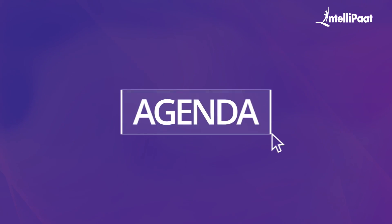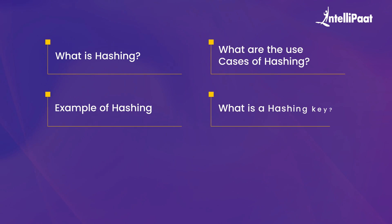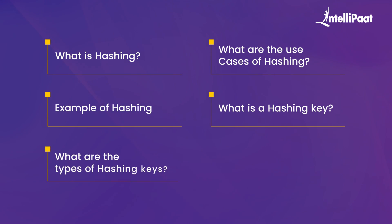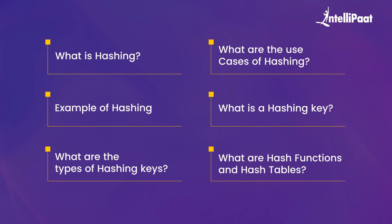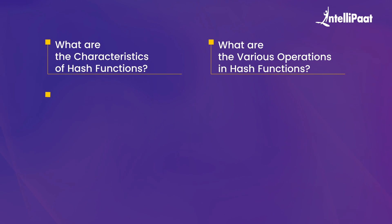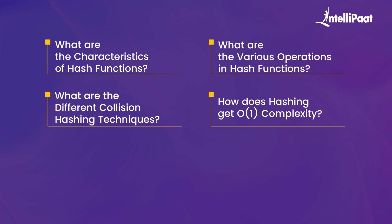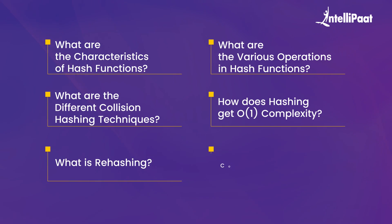Before getting into what hashing is and how it works, let us take a peek at the agenda of this video. Firstly, what is hashing? Then what are the use cases of hashing? Then we deal with an example of hashing. Then we talk about what a hashing key is, what are the types of hashing keys, what are hash functions and hash tables, the characteristics of hashing, various operations in hashing, different collision hashing techniques, how hashing gets O(1) time complexity, and what is rehashing. And with that we'll conclude.